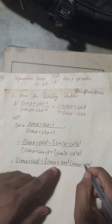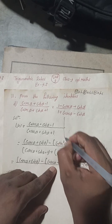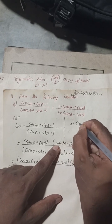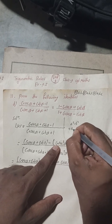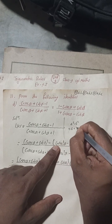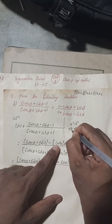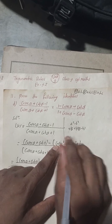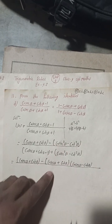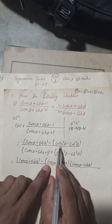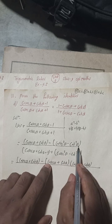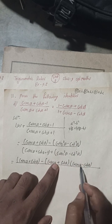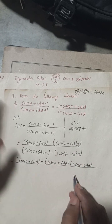Now cosec²α - cot²α can be factored using the identity a² - b² = (a + b)(a - b).